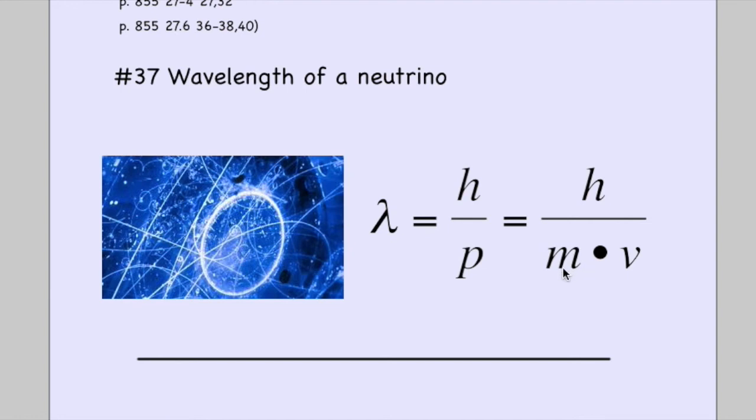The mass is very small. They can find the velocity, and so we can find the apparent wavelength of a mass-like object.